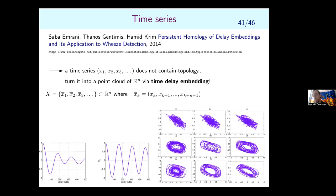Persistent homology can also be applied to time series via time-delay embedding: you choose a dimension n, take vectors of n consecutive values, obtaining a point cloud in R^n, and compute its persistent homology. Theoretical results guarantee that properties of the time series can be read from the topology of the time-delay embedding. This gives interesting information about periodicity and structure in time series.